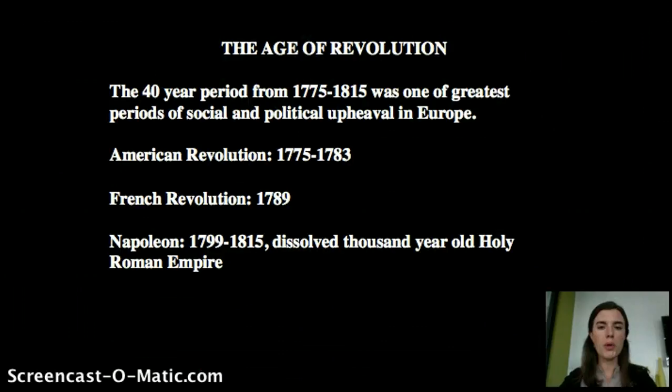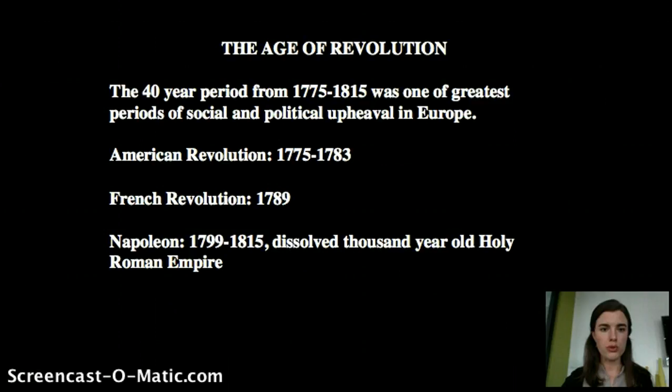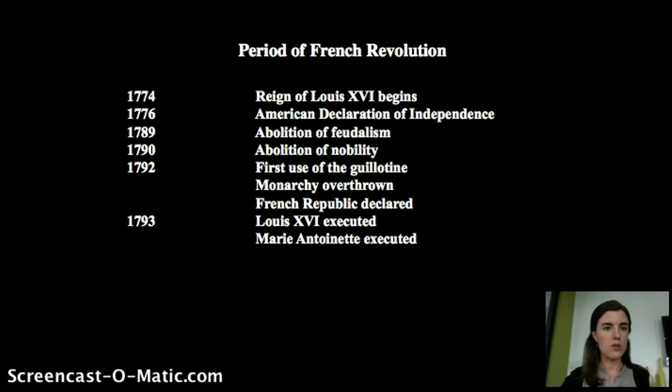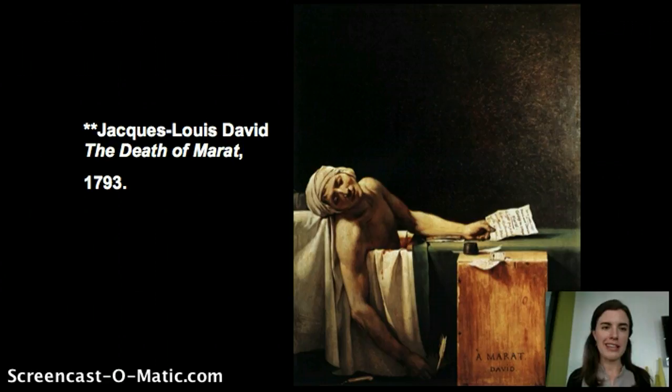The Age of Revolution spans roughly 40 years, from 1775 to 1815, a huge period of social and political upheaval encompassing both the American and French Revolutions. Napoleon eventually fills the power vacuum left after the chaos of the French Revolution. The reign of Louis XVI begins in 1774, followed by the American War of Independence, the abolition of feudalism and the nobility in France, and eventually the execution of both Louis XVI and Marie Antoinette by guillotine.